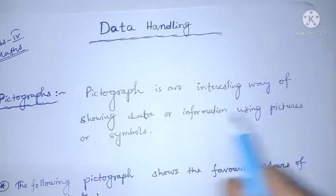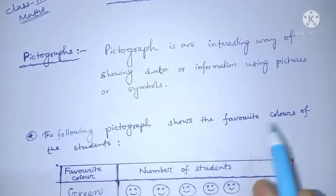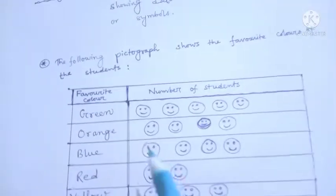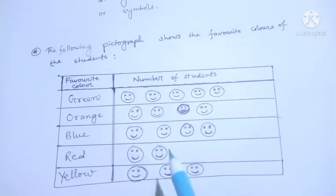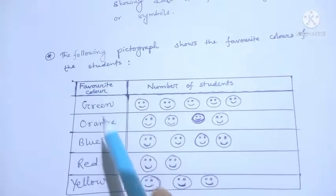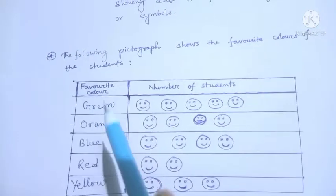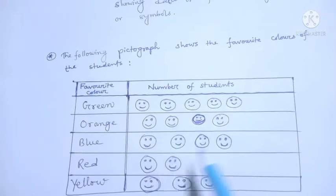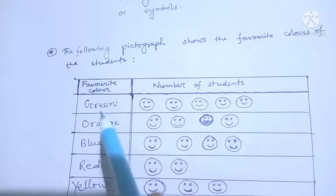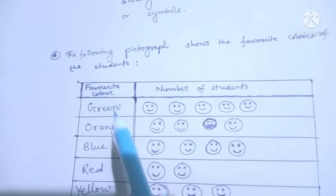The following pictograph shows the favorite colors of students. These are the symbols of students and these are the favorite colors: green, orange, blue, red, and yellow. The number of students who like green — one, two, three, four, five — that means five students like green.